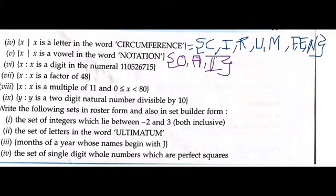Next is x where x is a digit in the numeral 110526715. The digits in this number are: one, zero, then we have five, two, six, and seven.